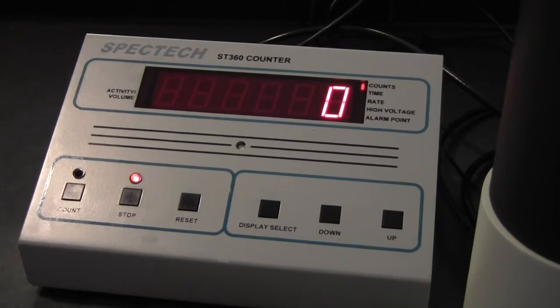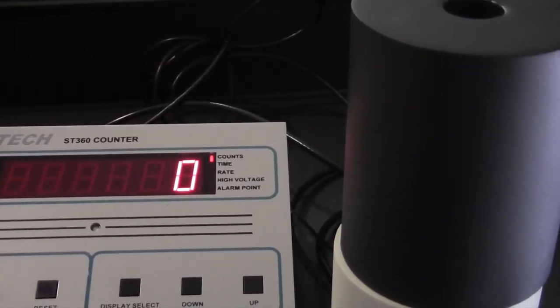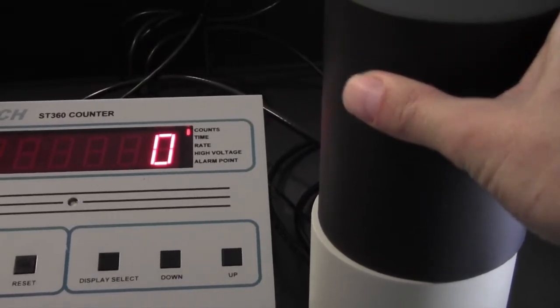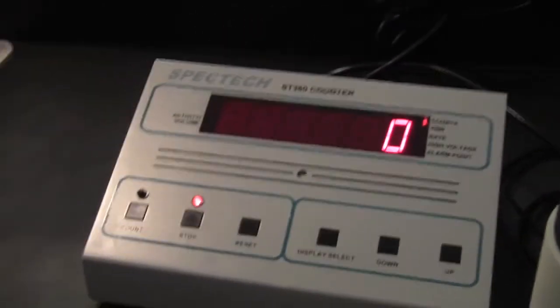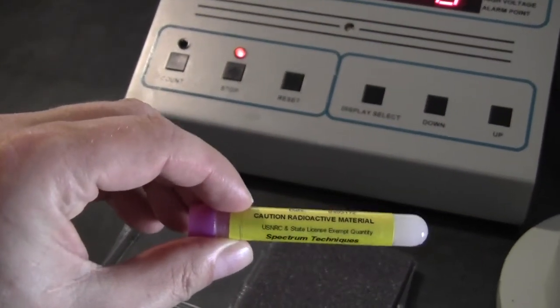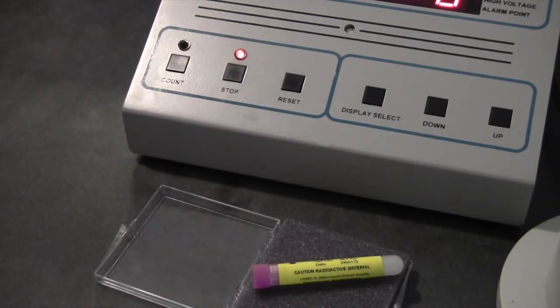The well detector is a sodium iodide detector with a 1.75 inches by 2 inch crystal. The well is 0.7 inches in diameter and 1.5 inches deep. It includes the stand and shield and the cable. Also included with the system is a cesium-137 tube source, a check source to help see if the system is working properly.